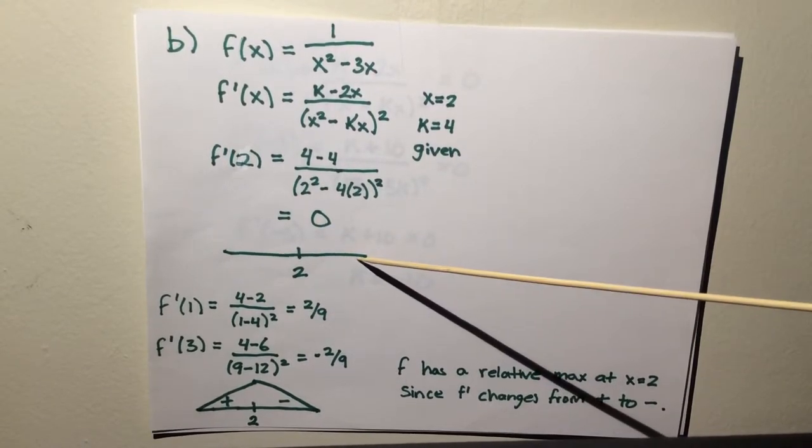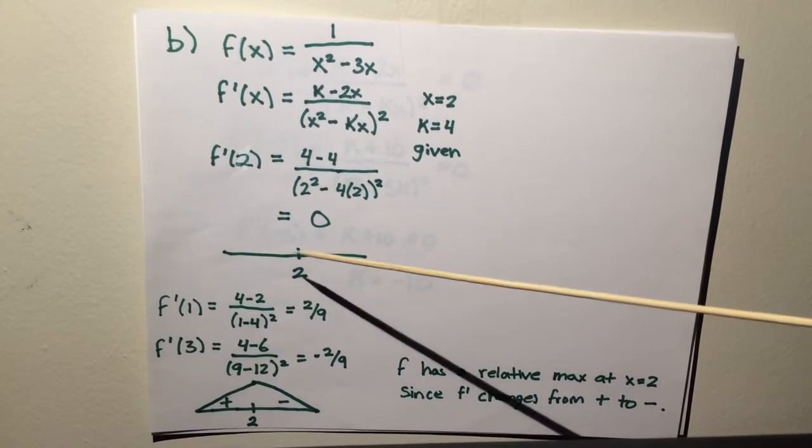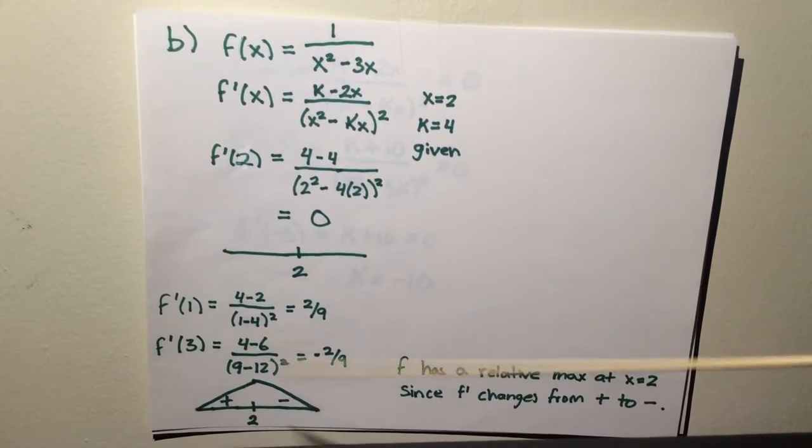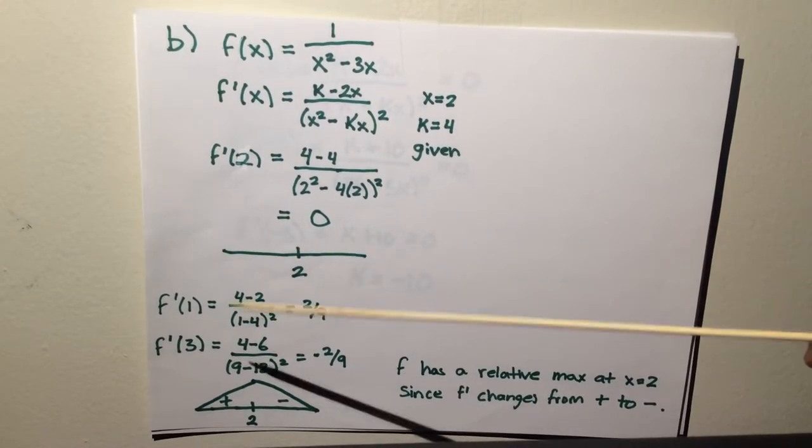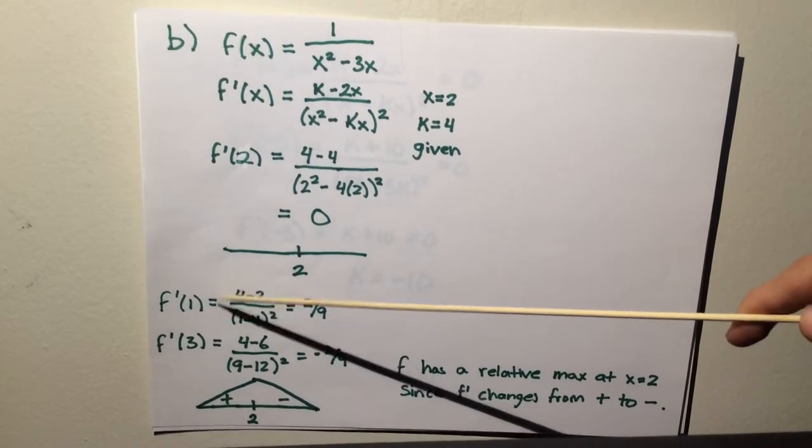You use a sign chart to determine if it's a max, min, or neither. You would have to test the left and the right side. For this, I tested 1.